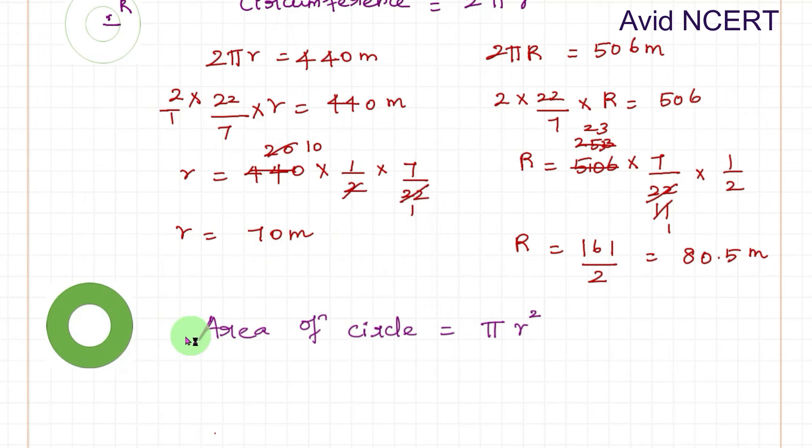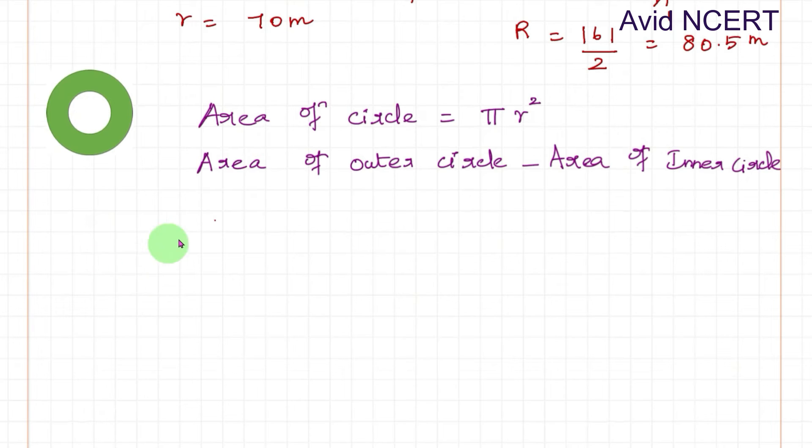To find this area which is to be leveled, we have to find the area of outer circle minus area of inner circle. πR² minus πr². Uppercase R is 80.5 meters, so substituting that: 22 by 7 times 80.5 meters times 80.5 meters. Meter into meter becomes meter square. Minus 22 by 7 times 70 meters times 70 meters.